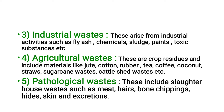The fourth category is agricultural waste. These are crop residues and include materials like jute, cotton, rubber, tea, coffee, coconut, straw, sugarcane waste, cattle shed waste, etc.